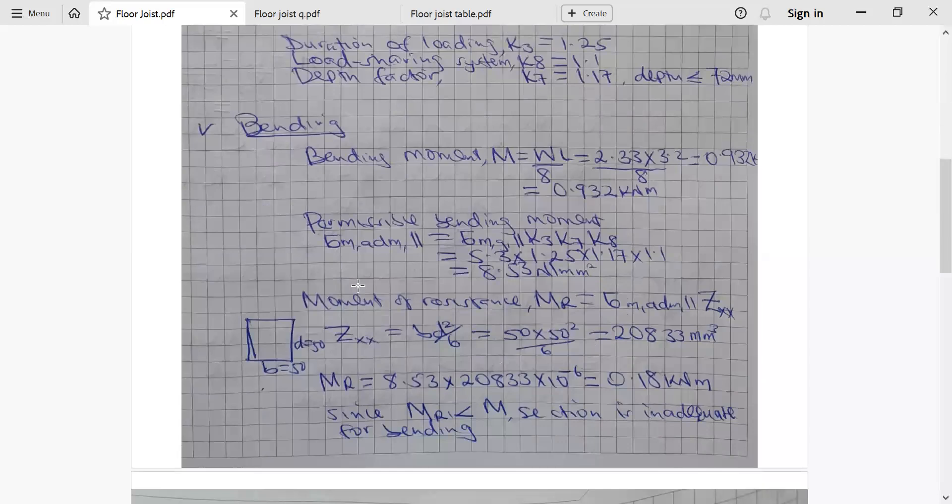Let's do the bending checks. The bending moment M will be equivalent to WL over 8, where W was the weight per joist, which is 2.33 times 3.2 over 8. This will give us 0.932 kilonewton meter. This is the bending moment from the imposed loads.